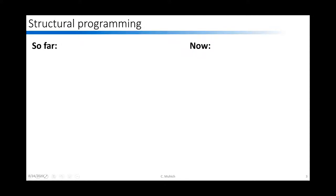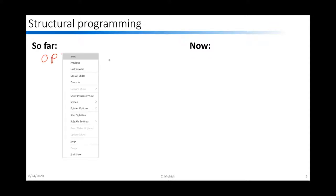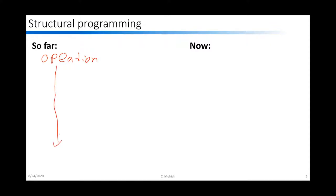So far, our class has talked about basic programming where we take a bunch of mathematical operations — sometimes only one, sometimes several in a row — and we get to a final answer. But this type of programming very much restricts what we can do. I have to know beforehand what I want to do at every single step of the way — step one, two, three, four, all the way down to the end.